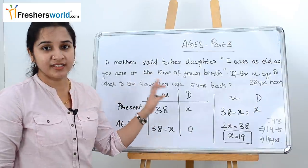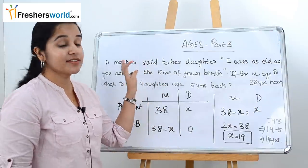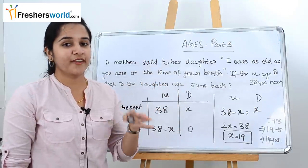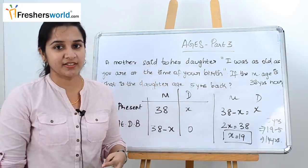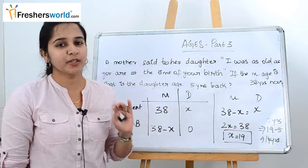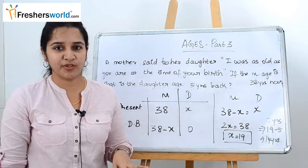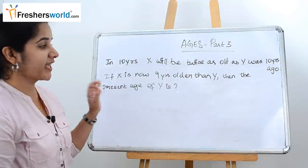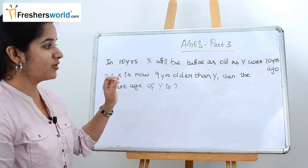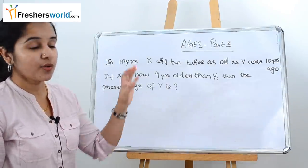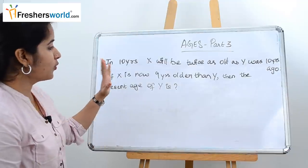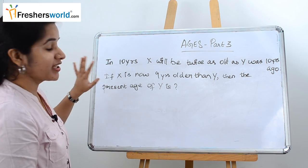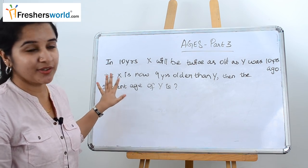Various kinds of questions can be asked in this format, and instead of mother and daughter it can be father and son or other relationships. This is a very common type of problem in aptitude exams. The next question is: in 10 years, x will be twice as old as y was 10 years ago. If x is now 9 years older than y, what is the present age of y? This is a classic ages question.